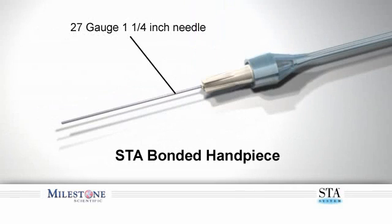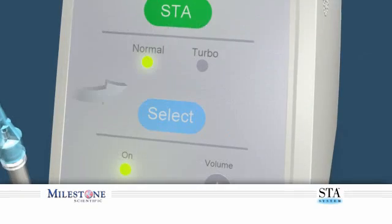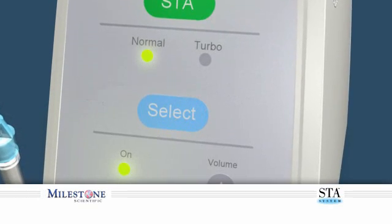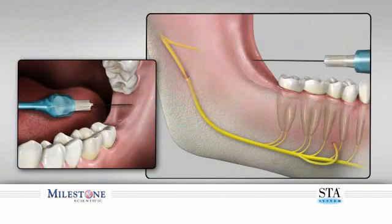It is recommended that you use a 27 gauge, one and a quarter inch needle to perform the inferior alveolar nerve block. Set up the STA in the normal mode and approach the site as you would normally using traditional anatomical landmarks of the oral cavity.